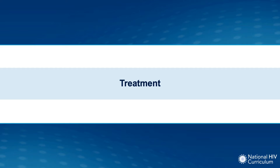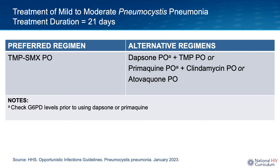The treatment of PCP is divided into two broad categories: mild to moderate disease and moderate to severe disease. For mild to moderate PCP, the treatment duration is 21 days, and the preferred first-line regimen is oral trimethoprim-sulfamethoxazole (trim sulfa), noting that the dosing is higher compared to prophylaxis dosing. An alternative regimen is dapsone taken with trimethoprim; you would need to check a G6PD level prior to giving someone dapsone to avoid the risk of hemolytic anemia in someone with G6PD deficiency. The dapsone-trimethoprim regimen involves many pills and may be more difficult for a patient to tolerate.